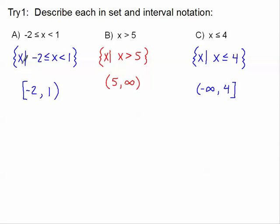Here are our answers. Set notation is pretty simple — you just put the set marks and the x such that. For problem A, there's a closed dot or bracket on the negative 2 because we include it, but a parenthesis on the 1 — there's our interval notation. For problem C, remember if we're talking about less than or equal to 4, we're going down toward negative infinity. So our interval notation starts at negative infinity and goes up to 4 with a bracket there. That is the end of our set and interval notation tutorial — see you soon to talk more about domain restrictions.